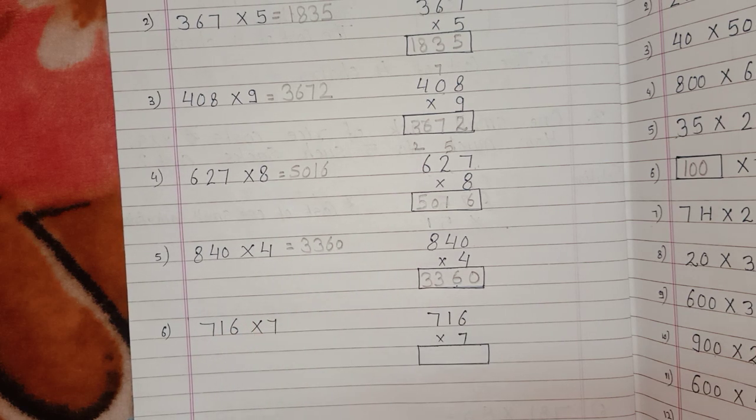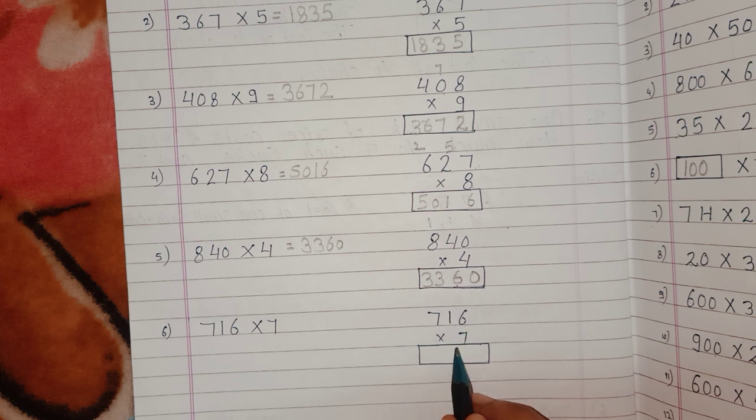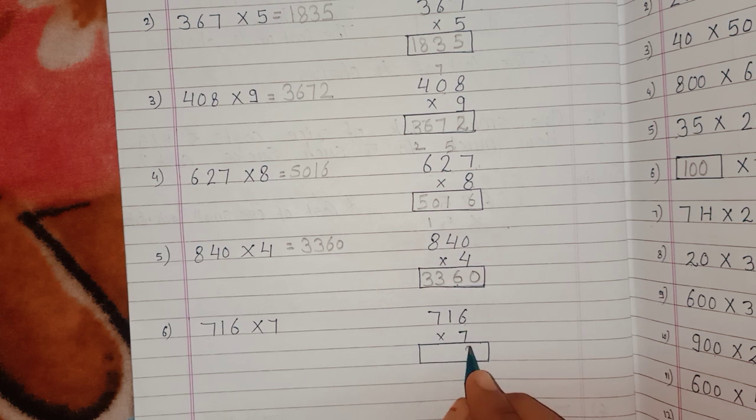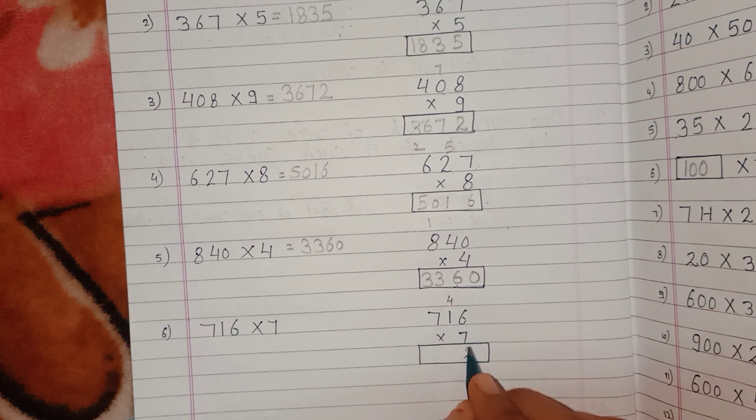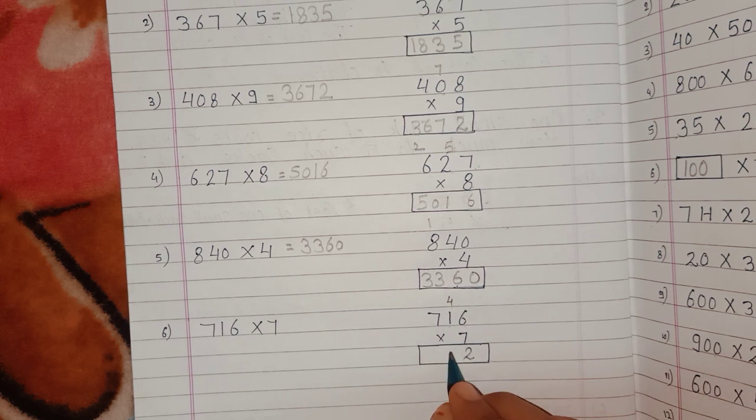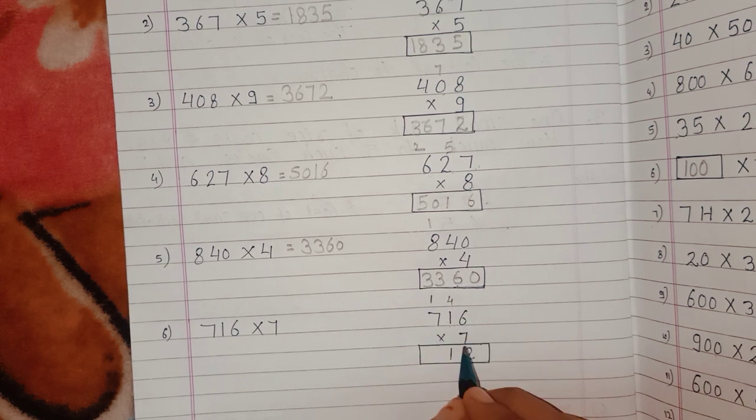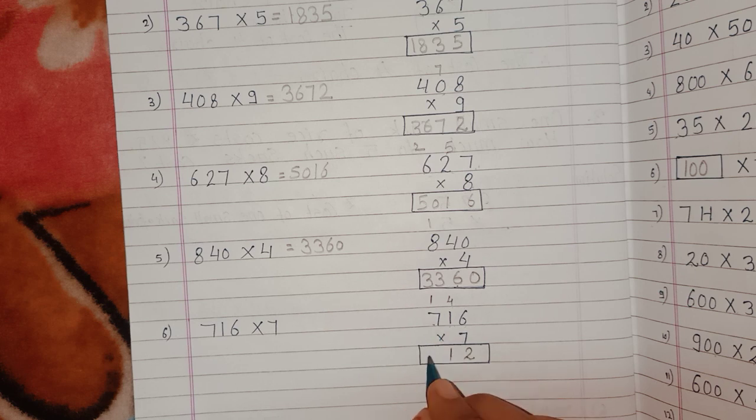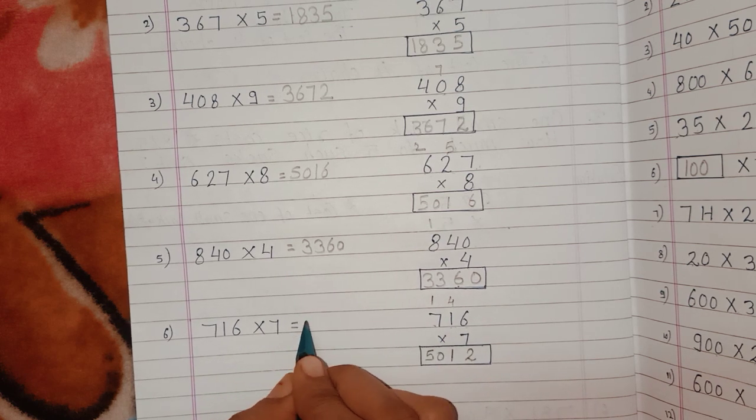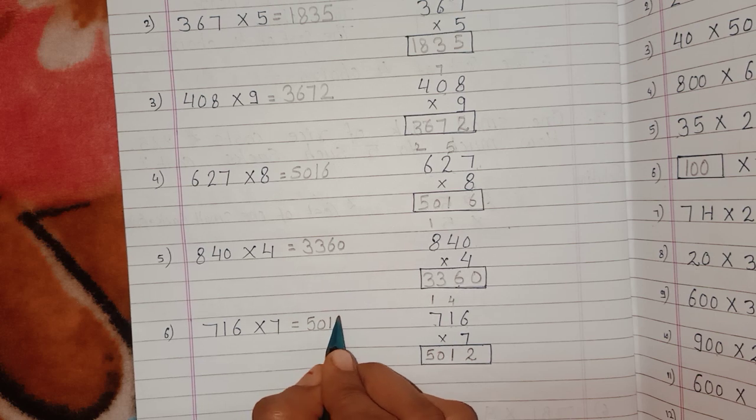Next question number 6: 716 multiplied by 7. 7 times 6 is 42, 2 here, carry 4. 7 times 1 is 7, plus 4 is 11, 1 here, carry 1. 7 times 7 is 49, plus 1 is 50. So the answer for this question is 5012.